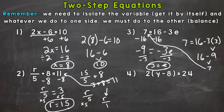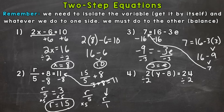Lastly, number 4. We have some parentheses in this one, and we need to get y by itself. We have 2 times (y minus 8) equals 24. We need to undo the left-hand side, so we'll divide both sides by 2 to undo the 2 outside the parentheses. 2 divided by 2 is 1, which leaves us with 1 times (y minus 8) — just y minus 8 — because anything times 1 is itself. And 24 divided by 2 is 12.